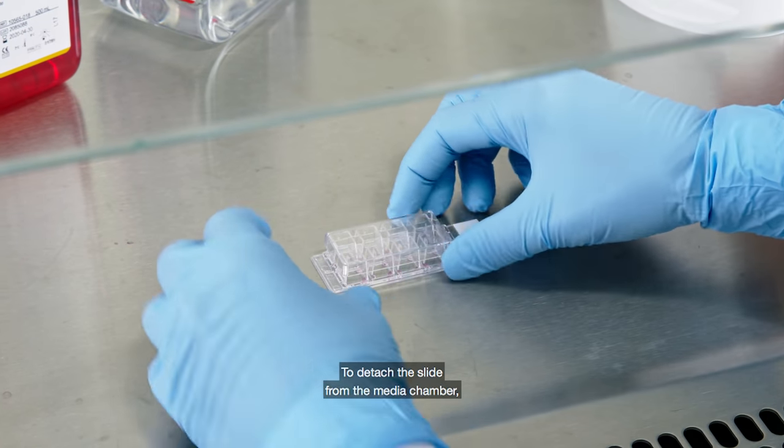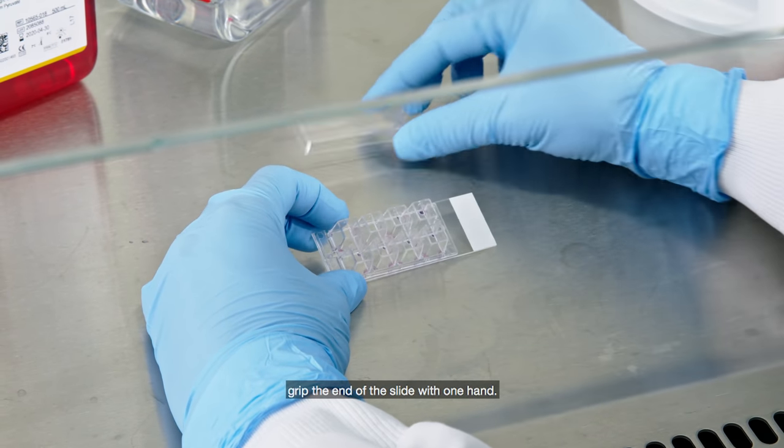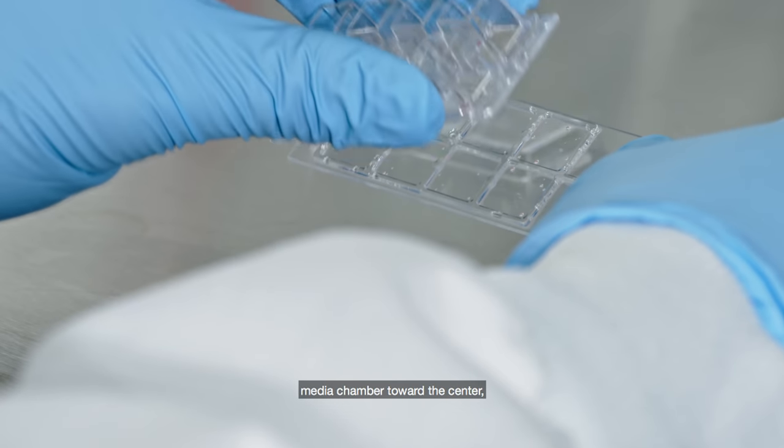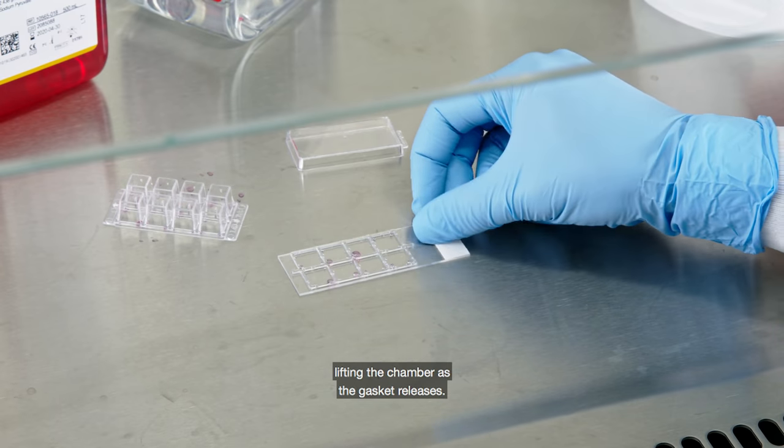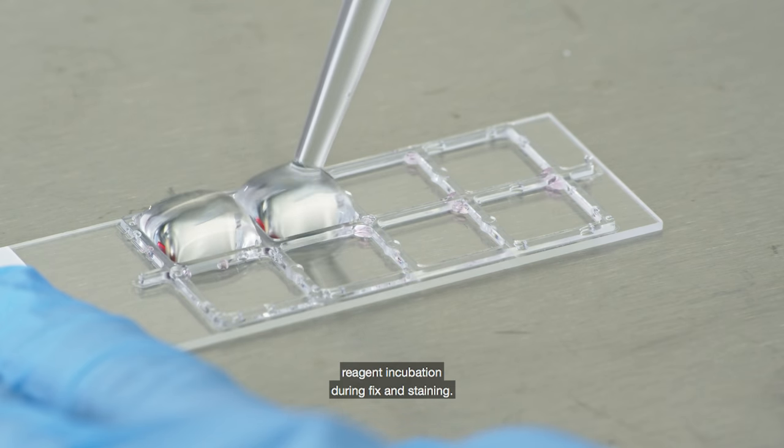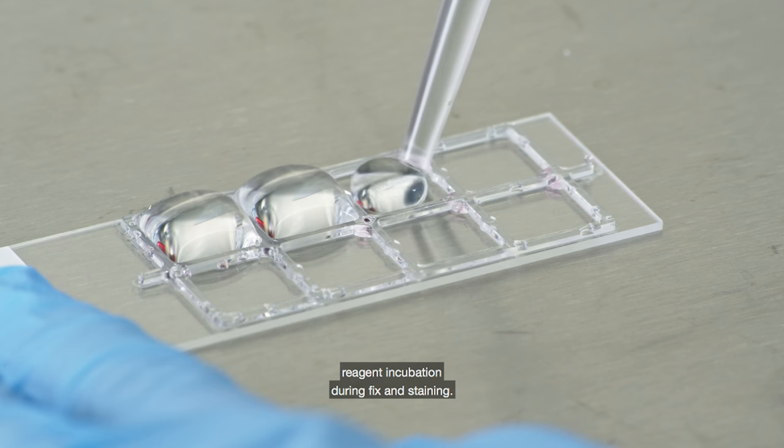To detach the slide from the media chamber, grip the end of the slide with one hand. Gently squeeze both ends of the media chamber toward the center, lifting the chamber as the gasket releases. The gasket may be used as a reservoir for reagent incubation during fix and stain.